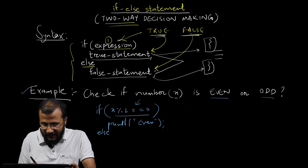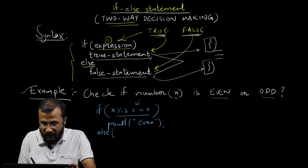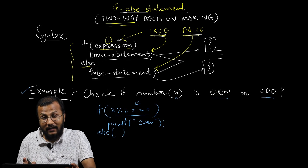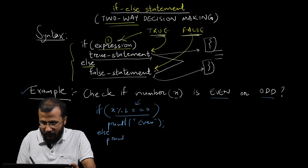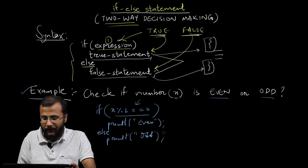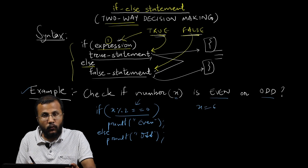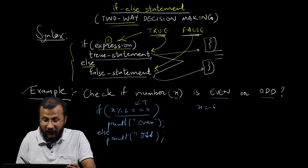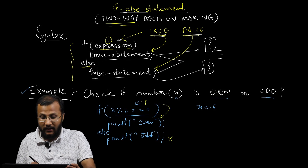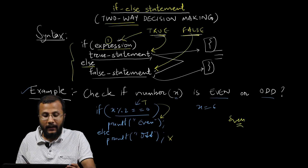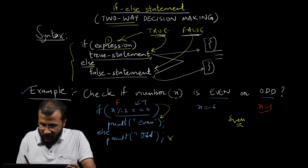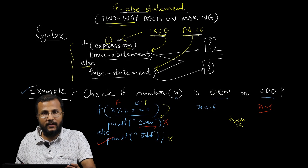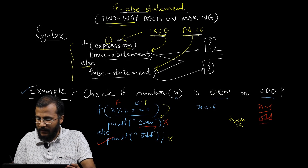There is the keyword else, and there is no parenthesis needed after else — just the keyword followed by a statement, which is the false statement. Here we write printf that the number is odd. For example, if x is 6: 6 % 2 is 0, which is true, so the true statement executes and 'even' is displayed. If x is 5: 5 % 2 equals 0 is false because 5 % 2 is 1, so the false statement executes and 'odd' is displayed.